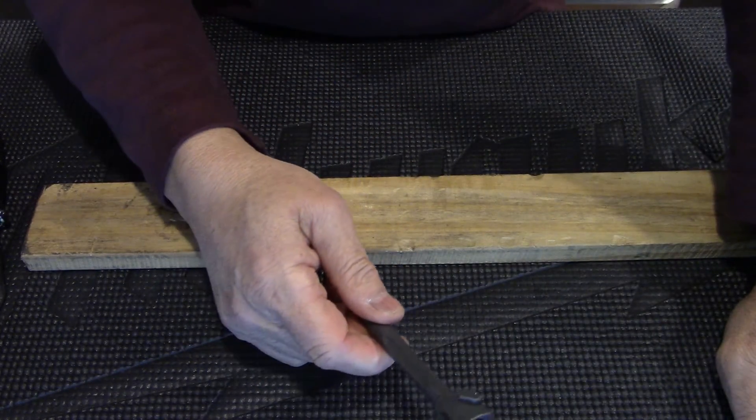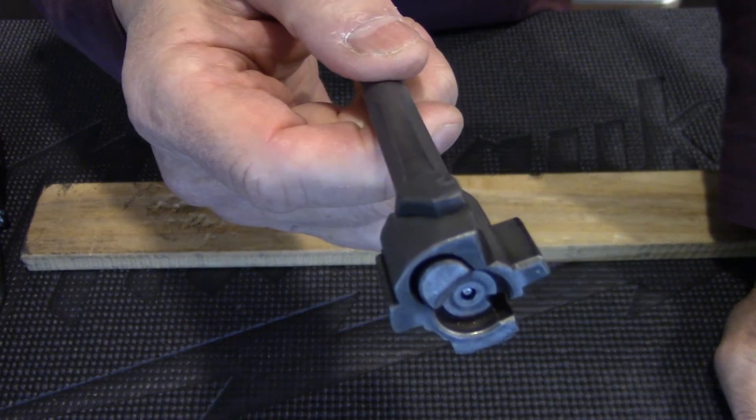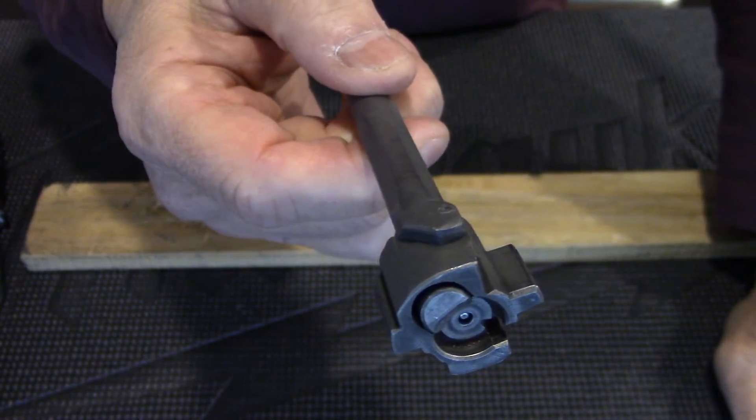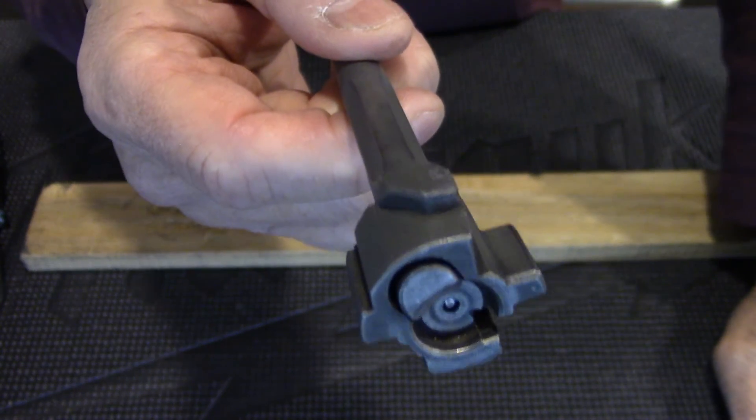So that's it. That's how you disassemble a Type 81 bolt. Please subscribe and thank you for joining me.